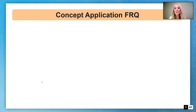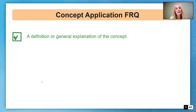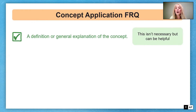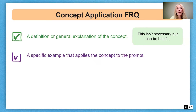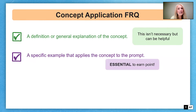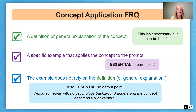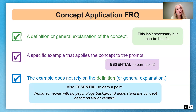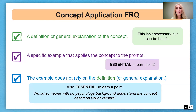In a concept application FRQ, it is important to think about giving a definition or a general explanation of a concept — while it's not necessary, it can be quite helpful. What you will absolutely have to do to earn the point is provide a specific example that applies the concept to the prompt. If you do provide a definition, make sure your example doesn't rely on that definition. Ask yourself: would somebody with no psychology background whatsoever understand the concept based upon my example?